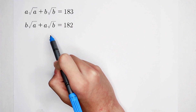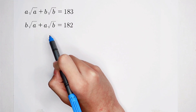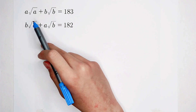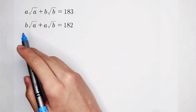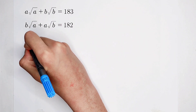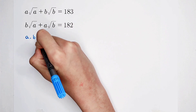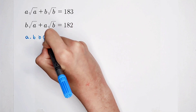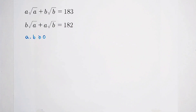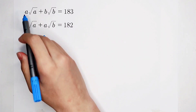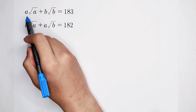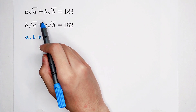So first, what should you do? Since A and B are under the square roots, they have to be non-negative. And then, what should you do? The domain is established. Can you find the relationship between A and the square root of A, and B and the square root of B?